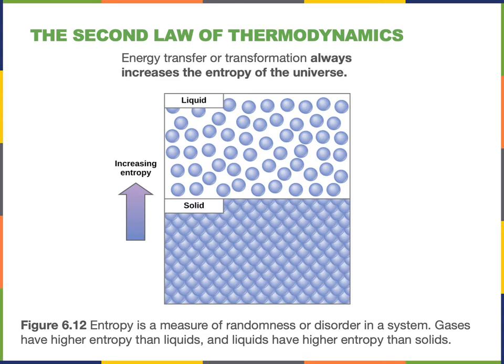The second law of thermodynamics states that energy transfer or transformation always increases the entropy of the universe. Entropy is a measure of randomness or disorder. The illustration here compares the entropy of a solid to the entropy of a liquid — the atoms in the solid are highly packed together in a very organized structure, whereas the atoms in the liquid are less organized and more spread out. Energy is transferred into the solid as it melts to form the liquid, and that energy is transferred into the kinetic energy — the movement of the molecules.